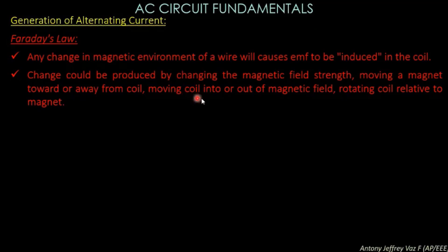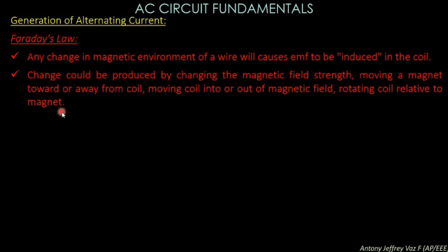The change can also be produced by moving a coil into or out of a magnetic field, or rotating a coil relative to the magnet. So Faraday's law states that if you have a coil and a magnet, then an induced EMF can be produced in the coil when the magnet is moved through the coil. There are two ways to produce the voltage in a coil.